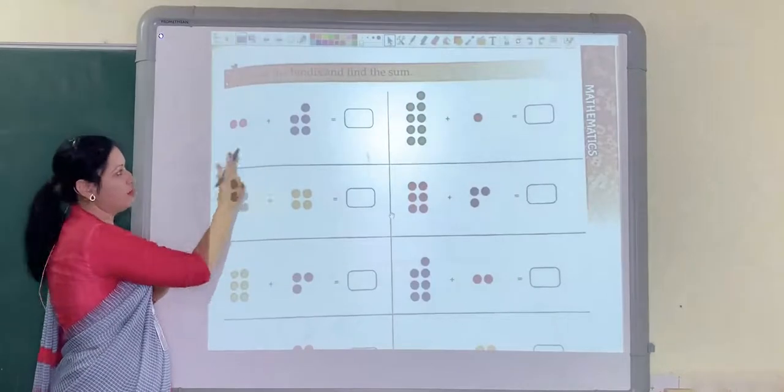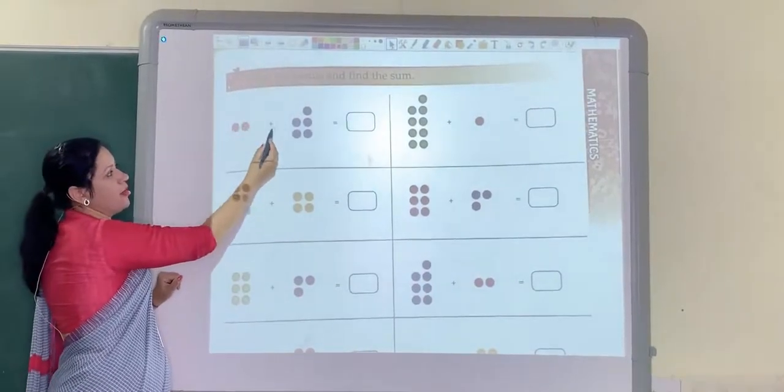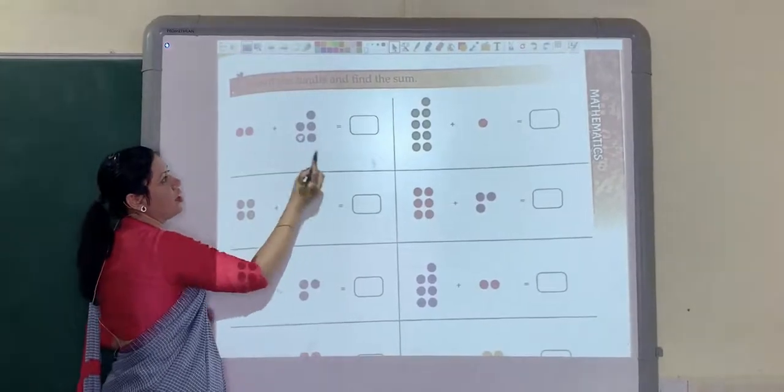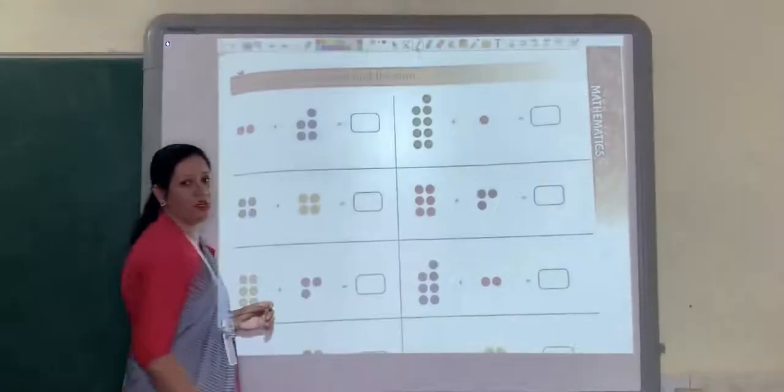Count the bindis and find the sum. So here some bindis are given. 1, 2 plus how many bindis? 1, 2, 3, 4, 5. Now all together makes how many bindis?